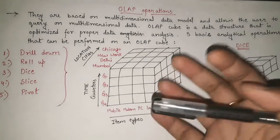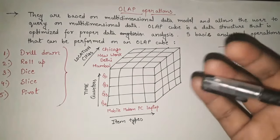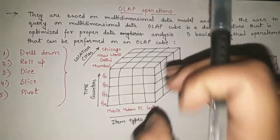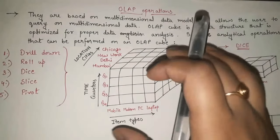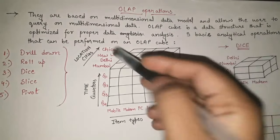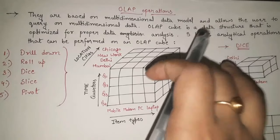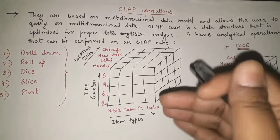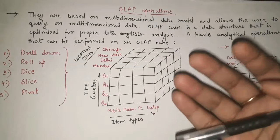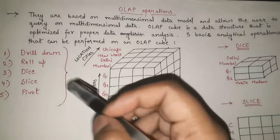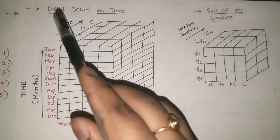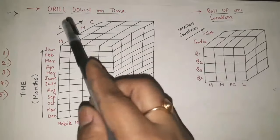The first operation is drill down. As the name indicates, we want to drill down into specific information — meaning if information is given to us but we want it in more detail, we drill down. For any dimension where we want more detailed information, we simply drill down to get more granular data.